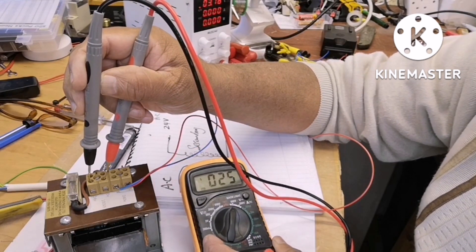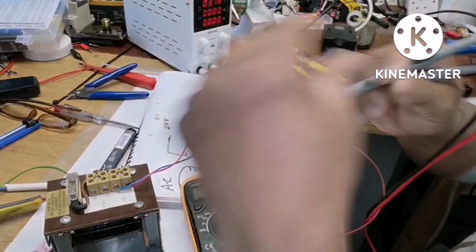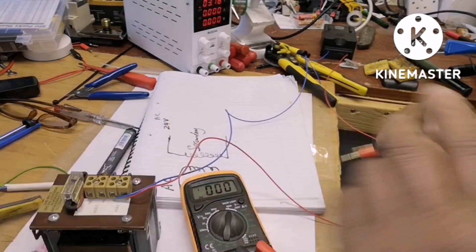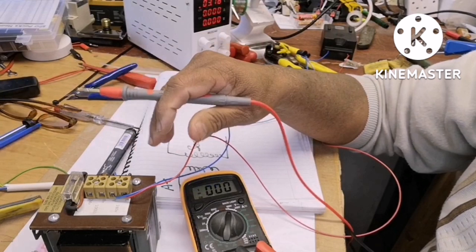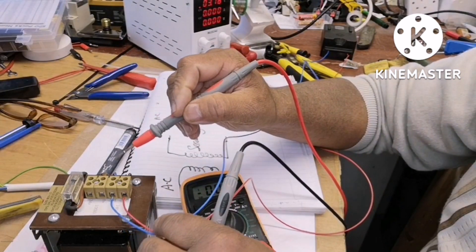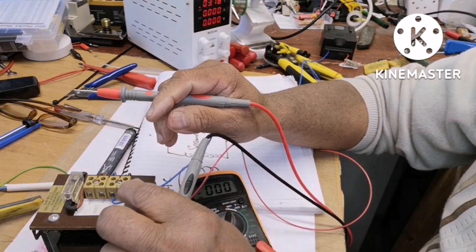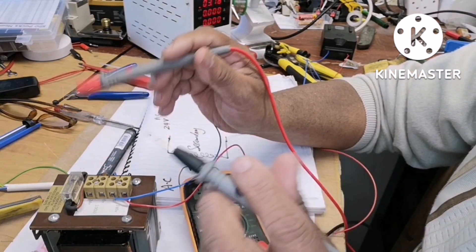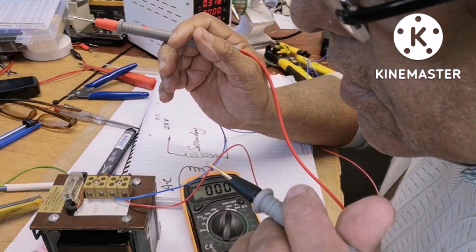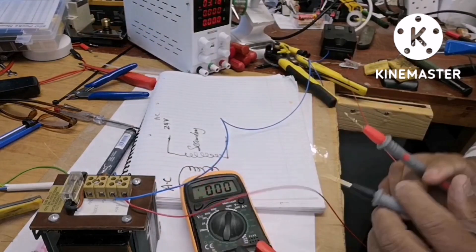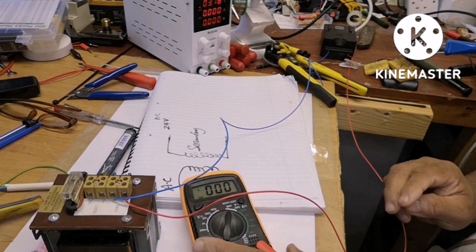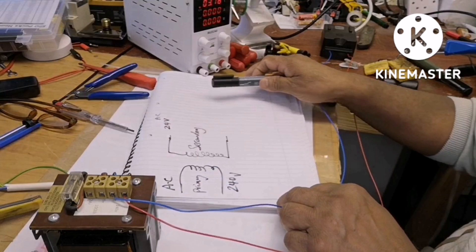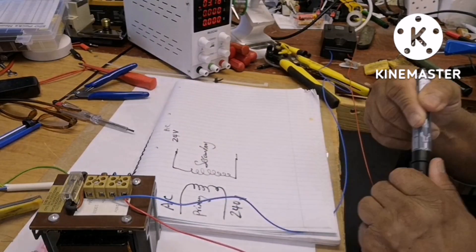This side is a fuse. Now this transformer is alive, and there is a fuse for safety reasons. Next time I will be explaining how to connect diodes as a bridge rectifier and turn that AC into DC. Thank you.